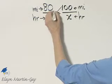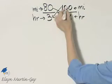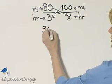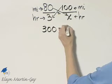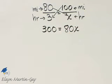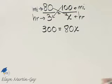I'll use cross products since I have a proportion set up. 100 times 3, that's 300. And then 80 times X, that's 80X. Now let's solve this equation for X.